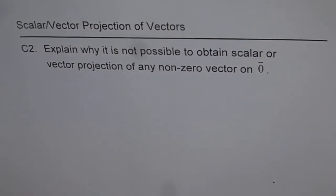In this series we are trying to understand projection of vectors, whether it is scalar or vector projection. Question C2 is: explain why it is not possible to obtain scalar or vector projection of any non-zero vector on zero vector. That's a very interesting question and we can answer it in a couple of ways.